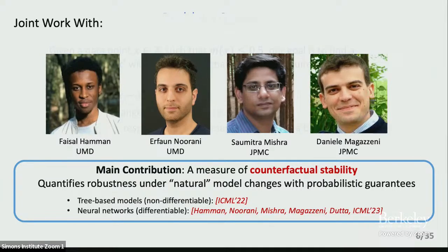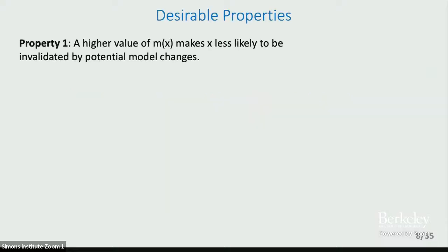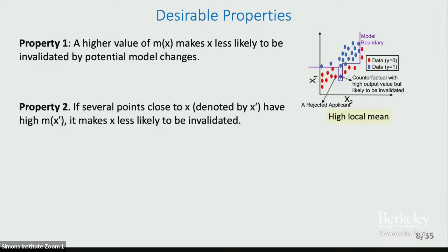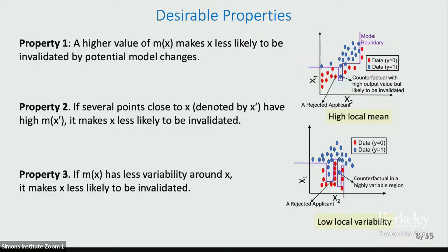So what is this measure of counterfactual stability? Before defining it, we axiomatically think through what would be the desirable properties for such a measure. One desirable property would be that if the model output is high — like 0.6 or 0.7 — we might think this point is more likely to remain stable and valid after model changes. But just a high output value may not be enough. The second property is that if several points around the point of interest also have a high model output value, that makes the point more stable. And the third property is that just a high local mean is also not enough — you also want low variability in the region where the point is located. So we are seeking high local mean value and low local variability.